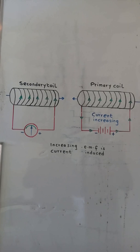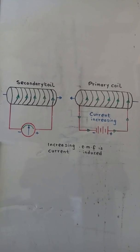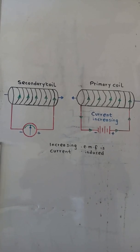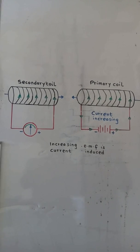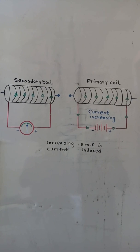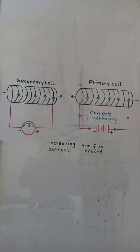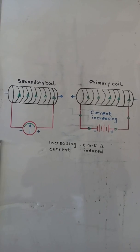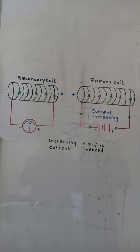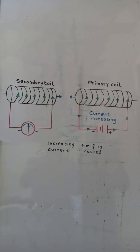When the current in the primary coil is increasing, this produces an increasing magnetic flux in the secondary coil. In response, there is an induced EMF in the secondary coil producing a current that in turn produces a magnetic field in opposition to the primary coil.